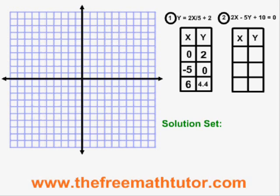For the equation on the right, equation 2, if x is equal to 0, y is equal to 2. If y is equal to 0, x is equal to negative 5. And for a third point, if x is equal to 8, y is equal to 5.2.